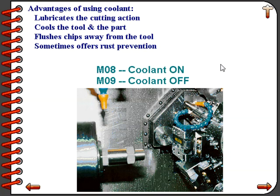Programming the coolant to come on and off is very simple. We use what is called an M code. For turning the coolant on we would command M08; to turn the coolant off you would command M09. Some machines offer more than one coolant pump, and in those situations you may have several different M functions to turn different coolant pumps on and off.